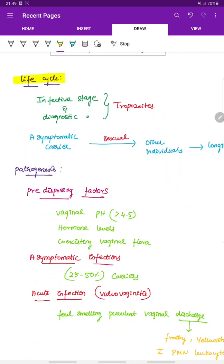Life cycle of Trichomonas vaginalis. Both the infective and the diagnostic stage is the trophozoid stage, as this is the only form seen.